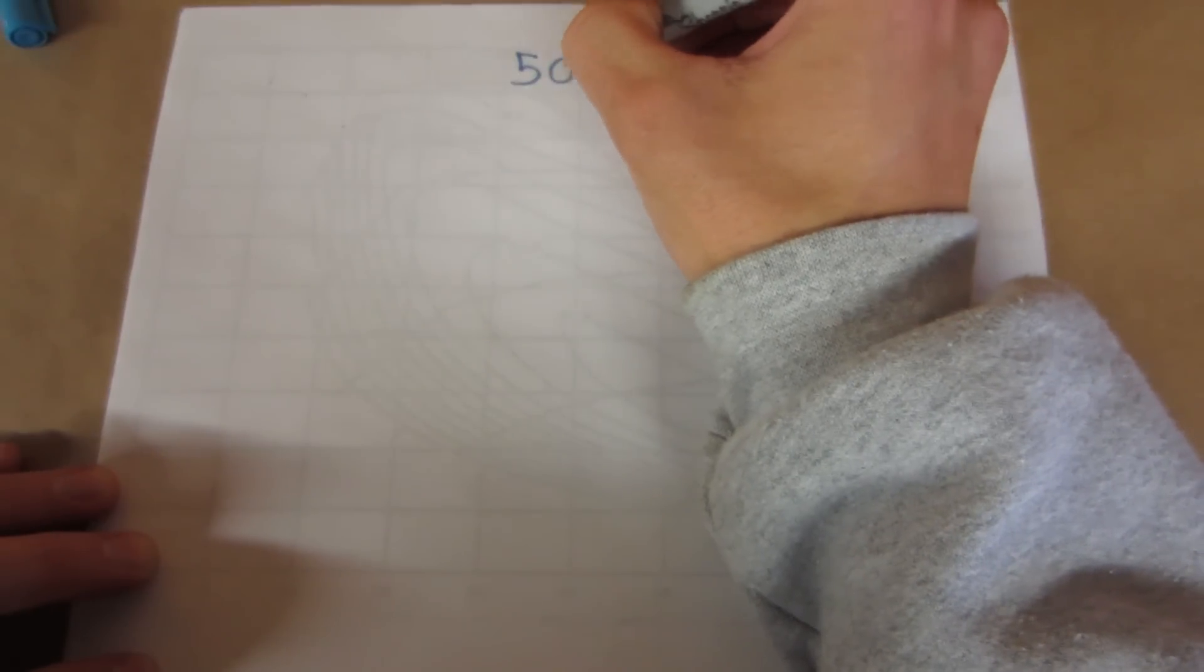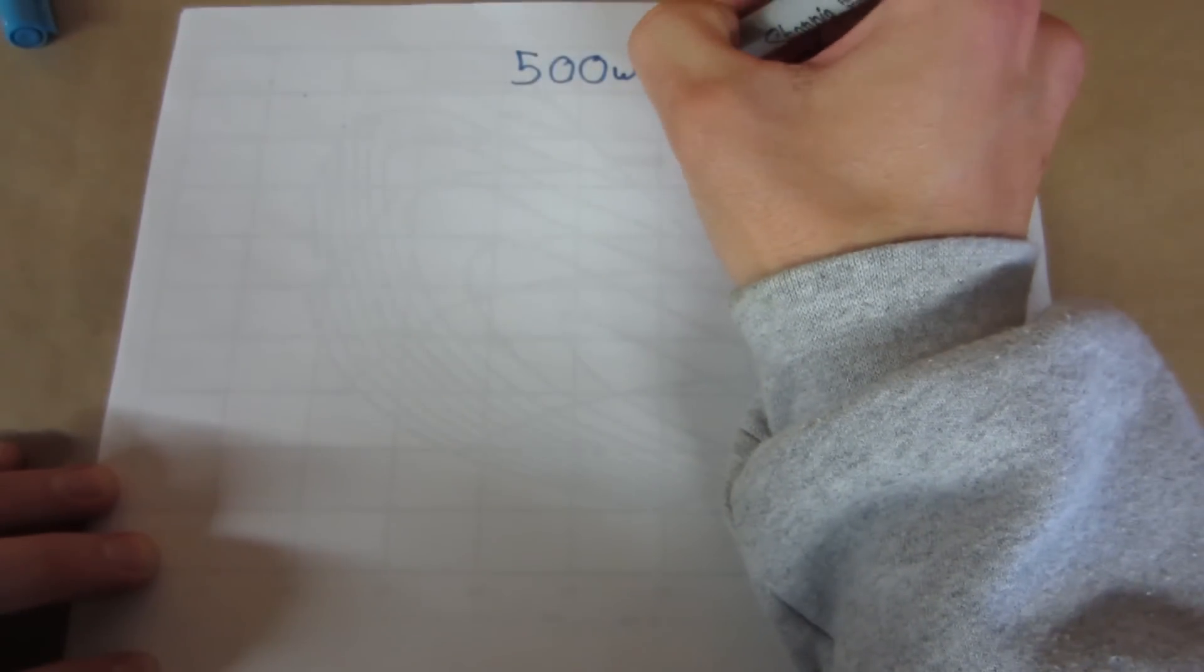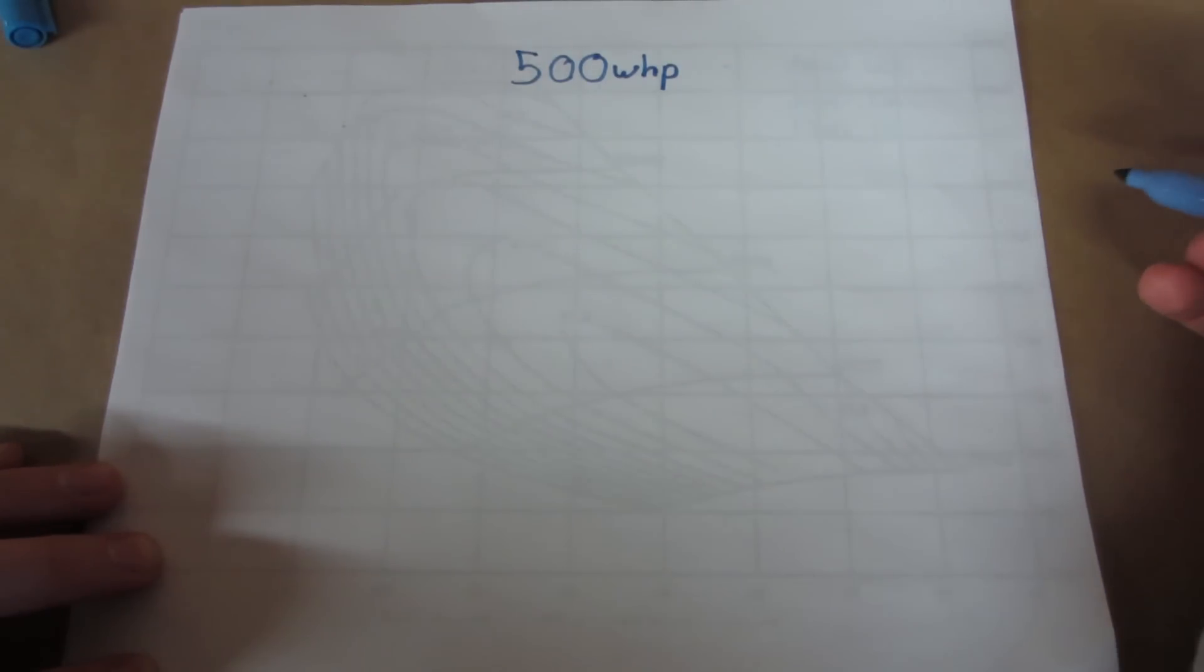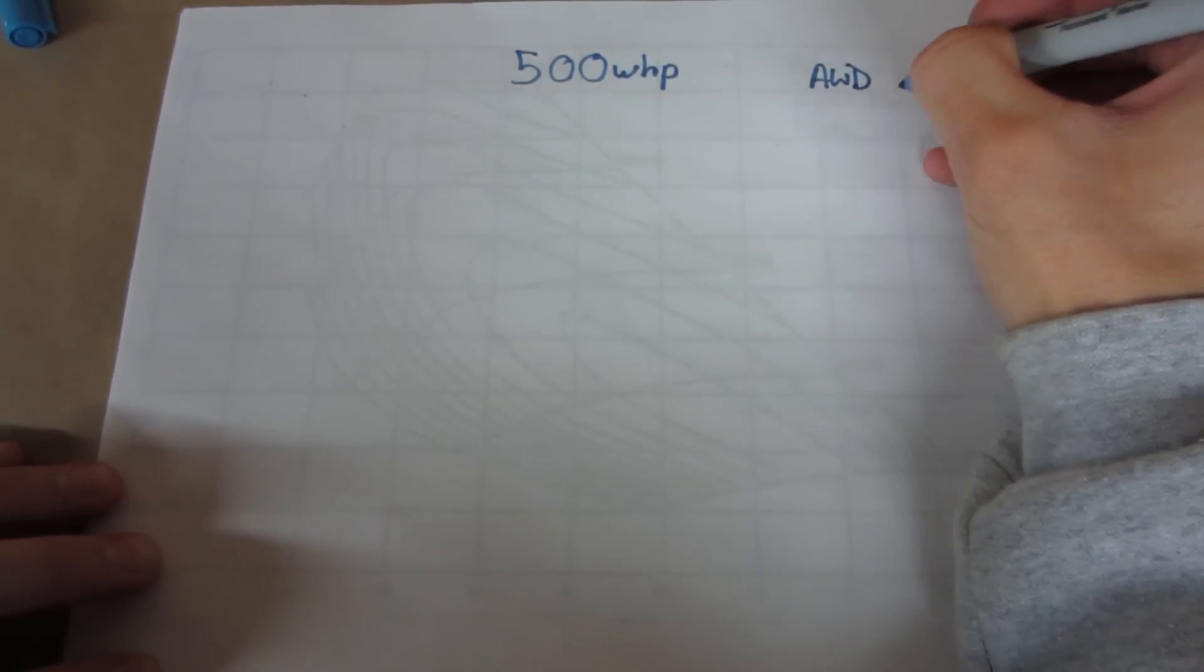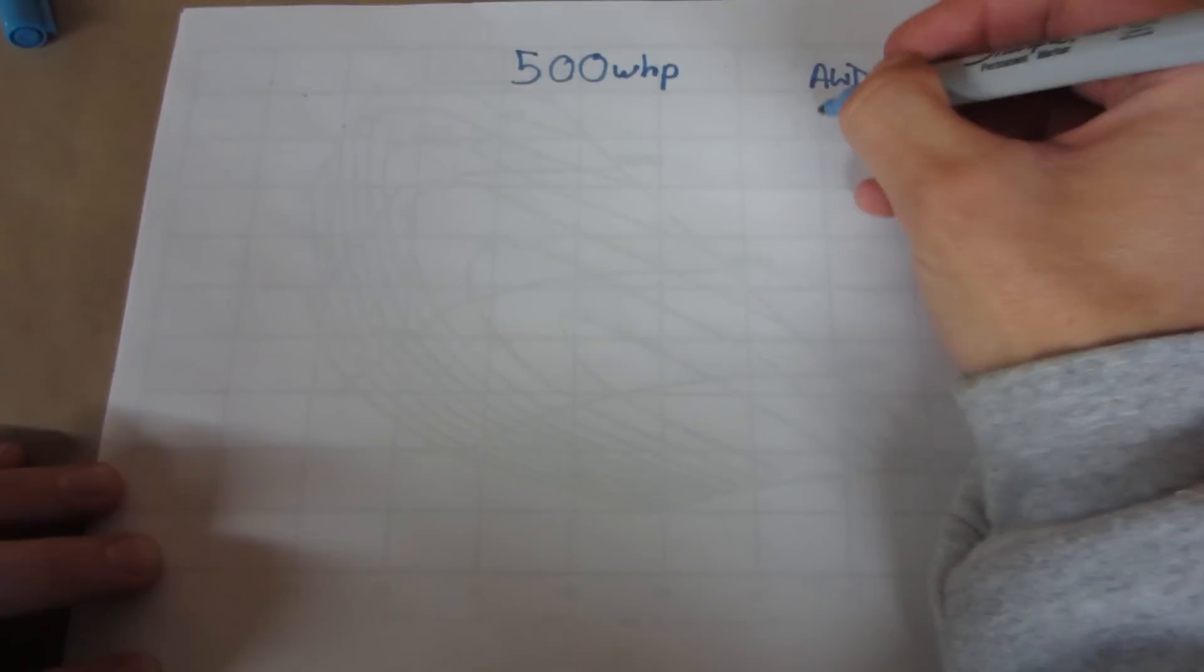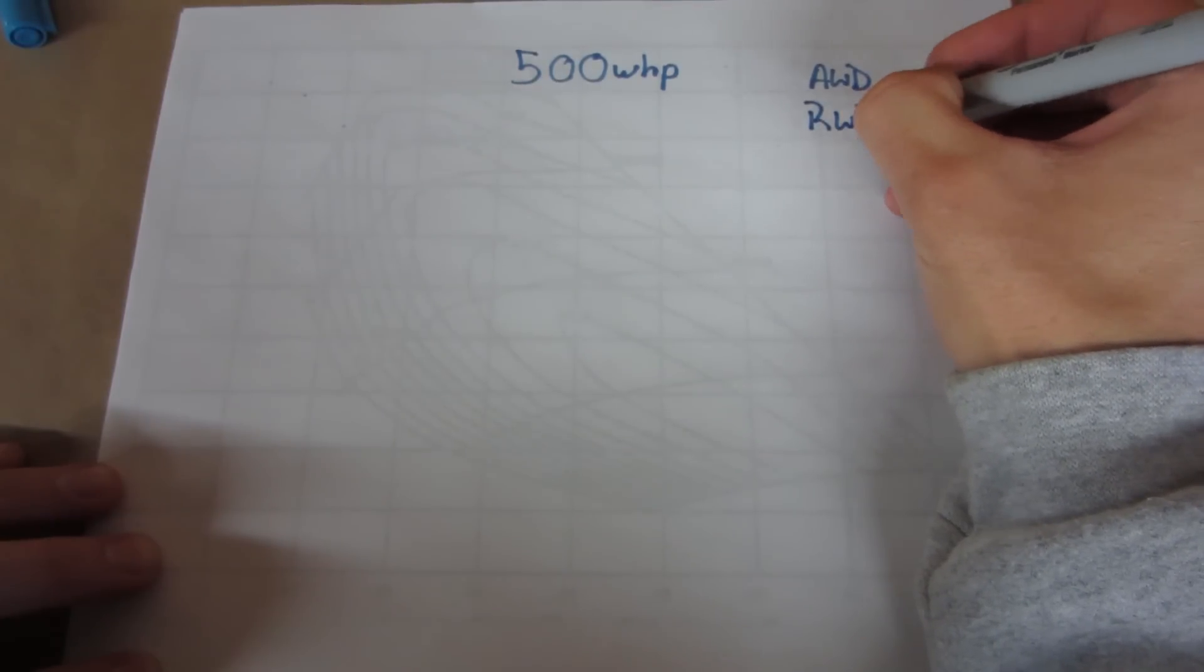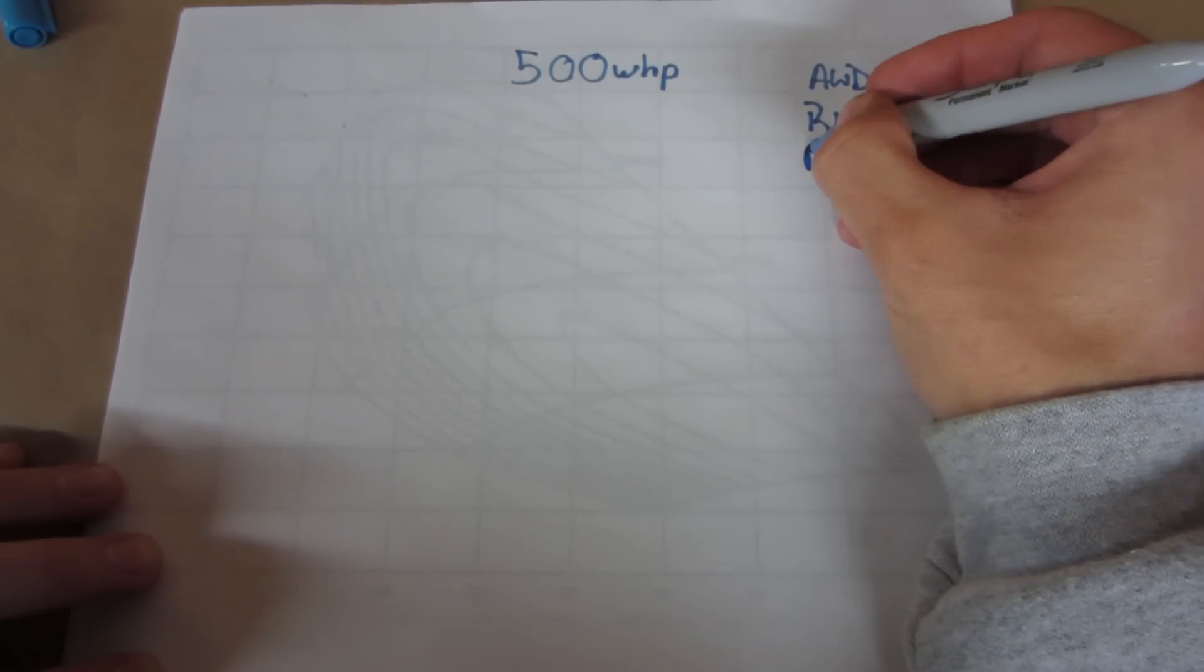Let's just say that we want 500 wheel horsepower. This represents the number that I would like to see to the ground, so you have to add in drivetrain loss. An all-wheel drive car is expected to lose 20 to 25 percent. Rear-wheel drive cars 15 percent and front-wheel drive cars 10 percent.